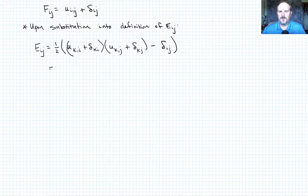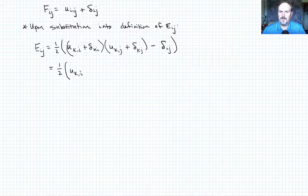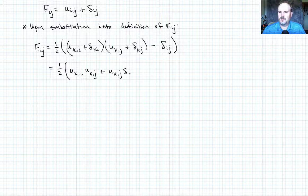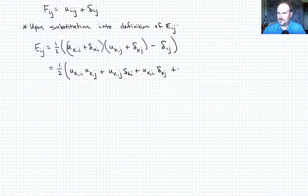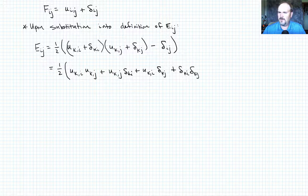So now let's go ahead and do the algebra. So this is just one half, and this is u_k comma i u_k comma j. And then this is going to look like plus u_k comma j times delta ki plus u_k comma i delta kj. Plus delta ki delta kj minus delta ij.